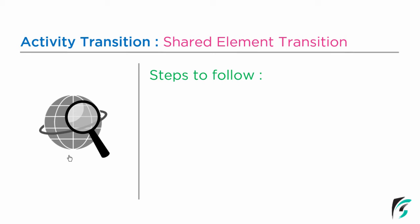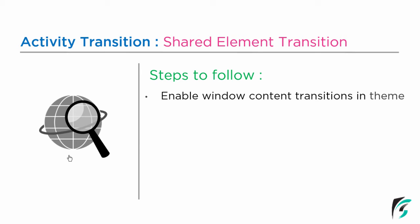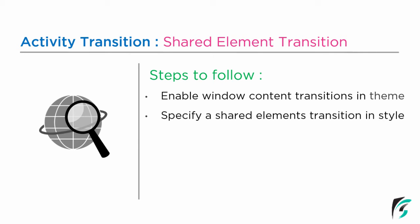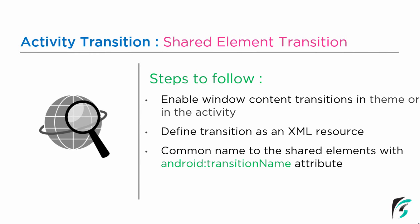For the shared element transition, we need to follow certain steps. First, we need to enable window content transition in the theme. Next, specify a shared element transition in the style. Then, give a common name to the shared elements with the Android transition name attribute — elements sharing the screen will have the same transition name. The next step is defining the activity options class, which is responsible for enabling the animation between activities. Let's move to Android Studio and begin coding.